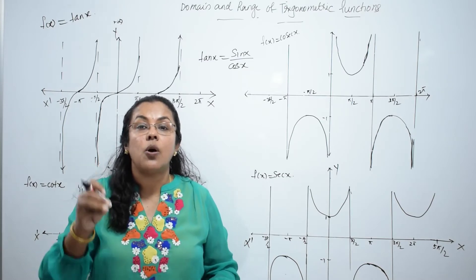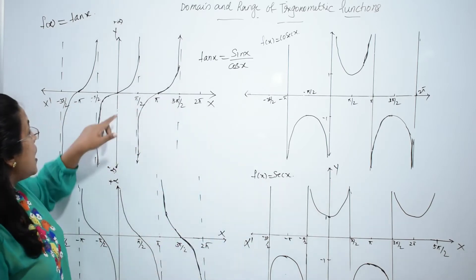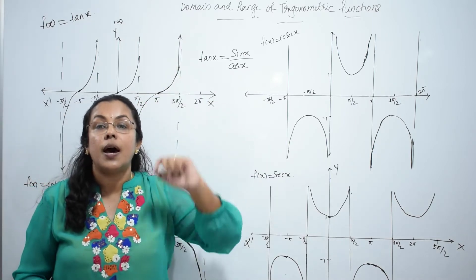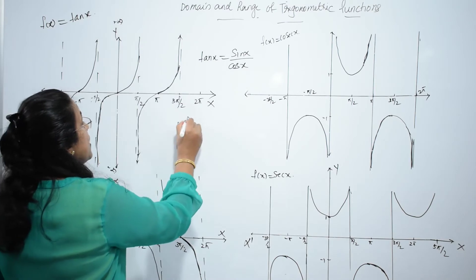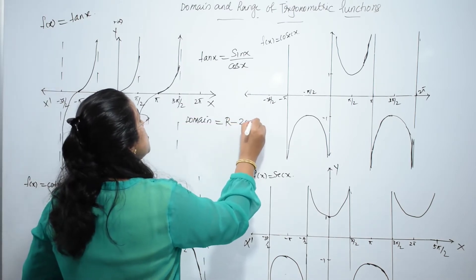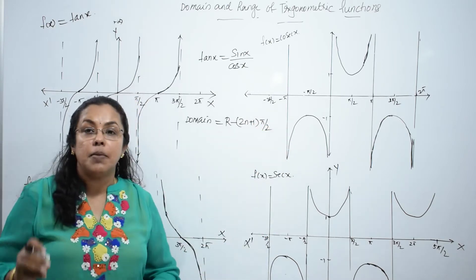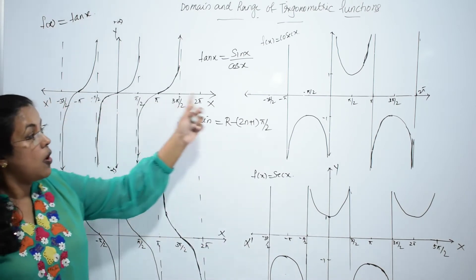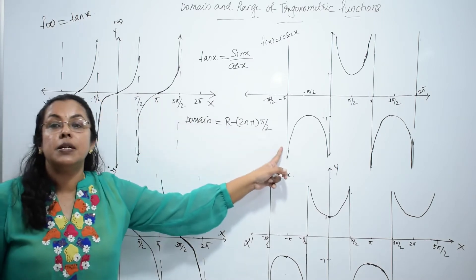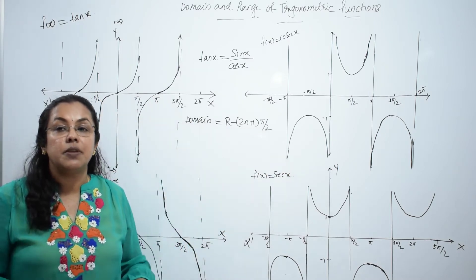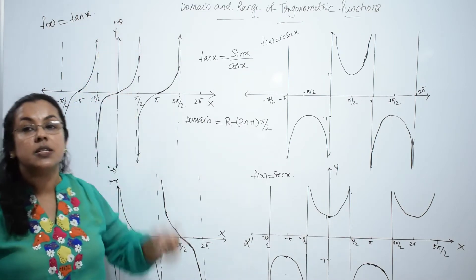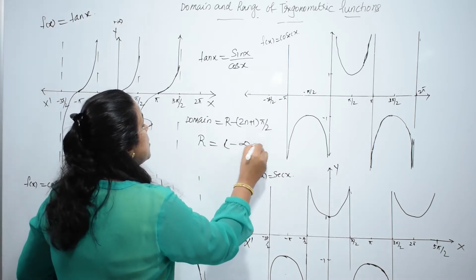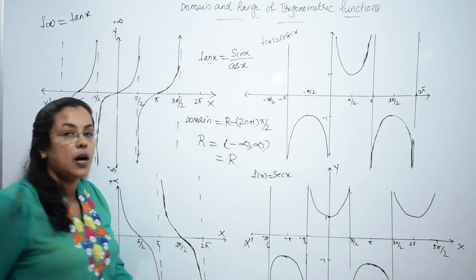Cos x is 0 at odd multiples of π/2 — at π/2, 3π/2, 5π/2 and so on. So the domain of tan x is ℝ minus {(2n+1)π/2}, that is, the set of all real numbers except odd multiples of π/2. Looking at the graph, the range of tan x is from minus infinity to plus infinity — the set of all real numbers.